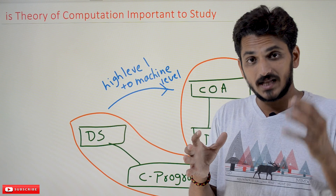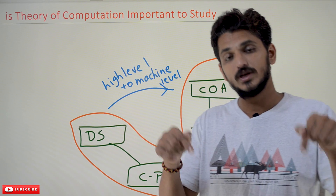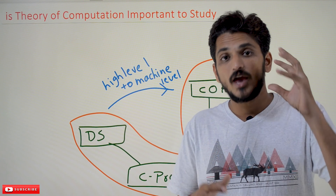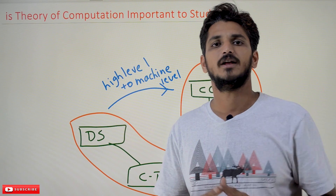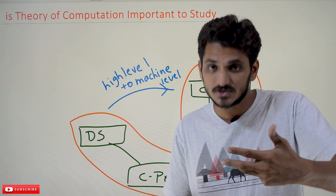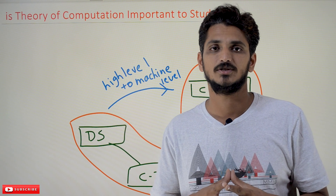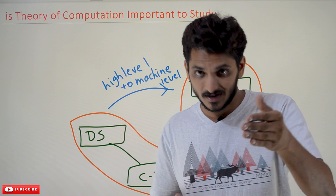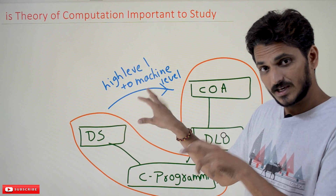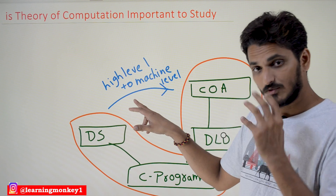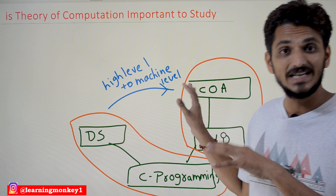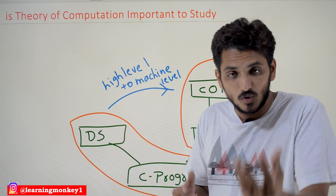This is the third part. If you have all this understanding at the level we discuss at Learning Monkey, the way you look at computer science is very very different — that is the visualization we are going to provide. The third package you need is understanding how high-level programming languages are converted into machine-level — this is what compiler design is going to do.